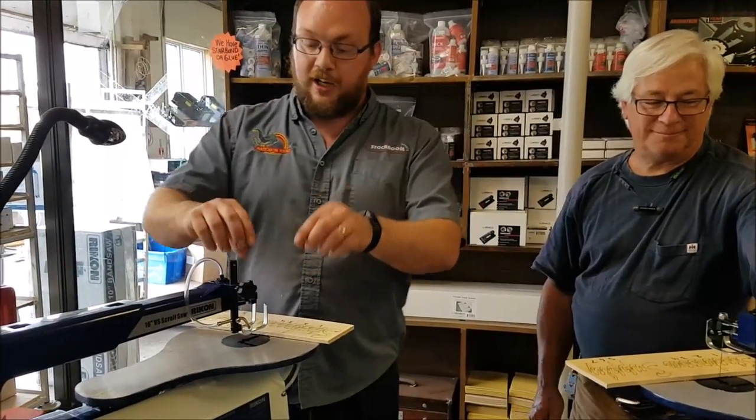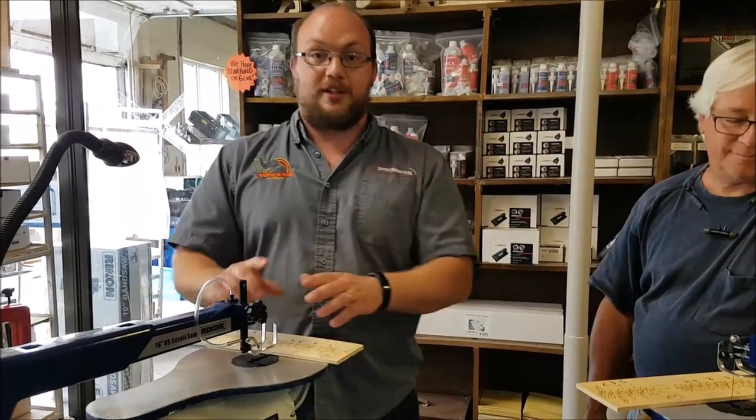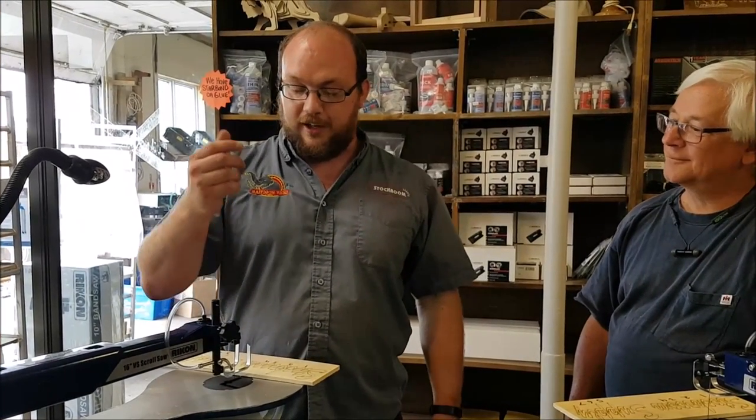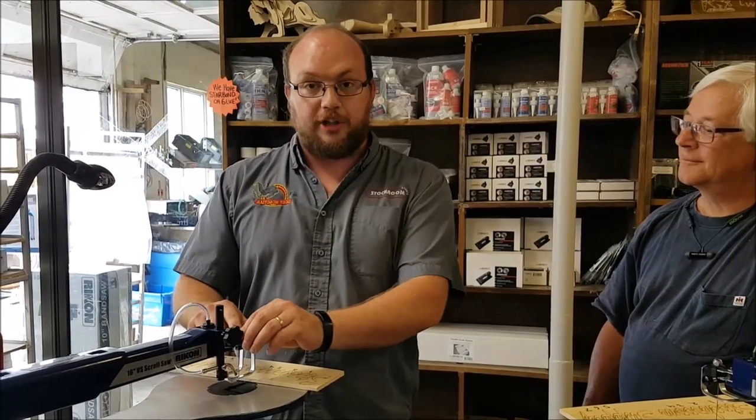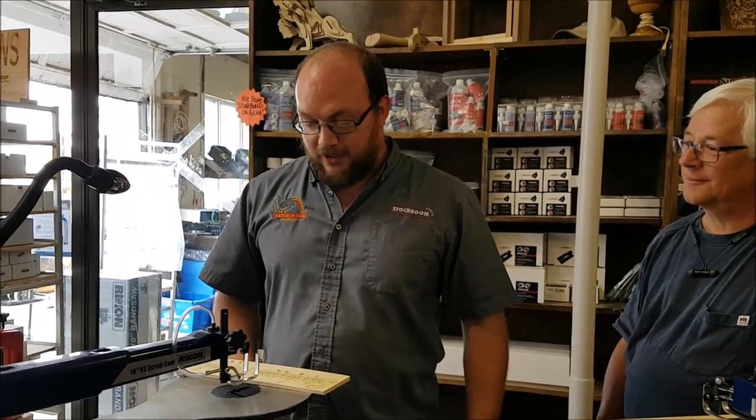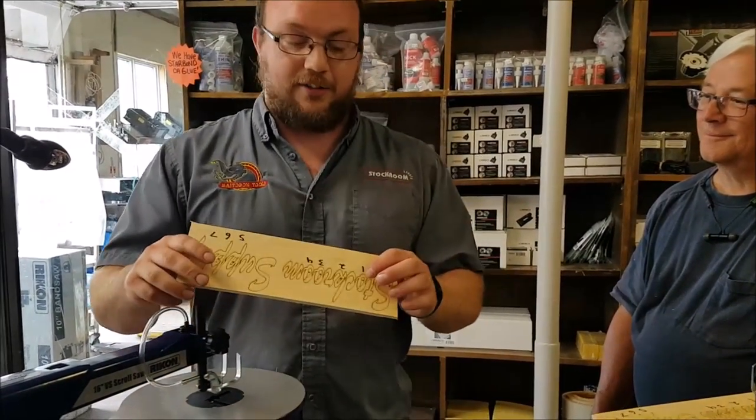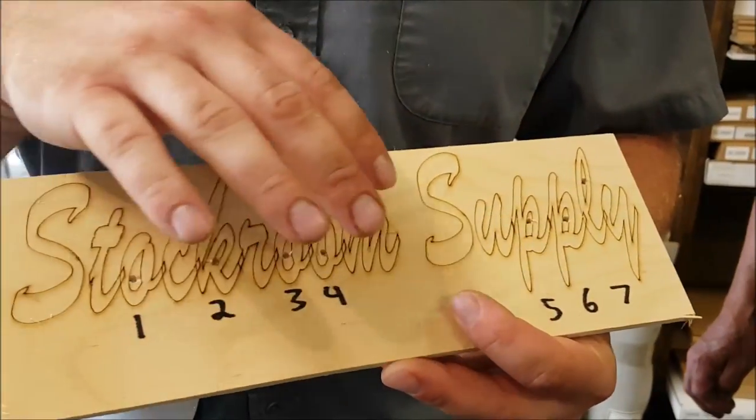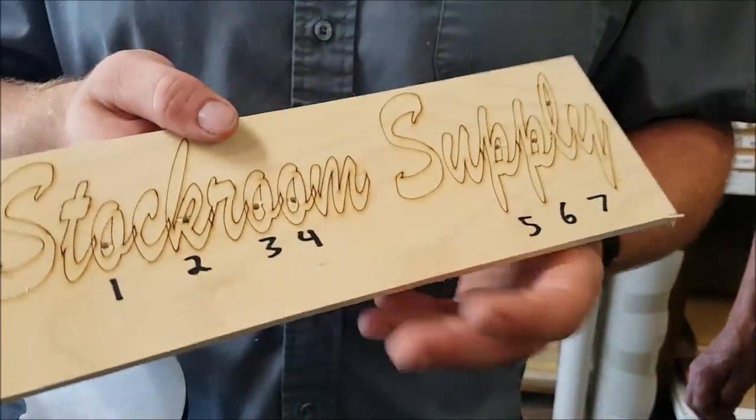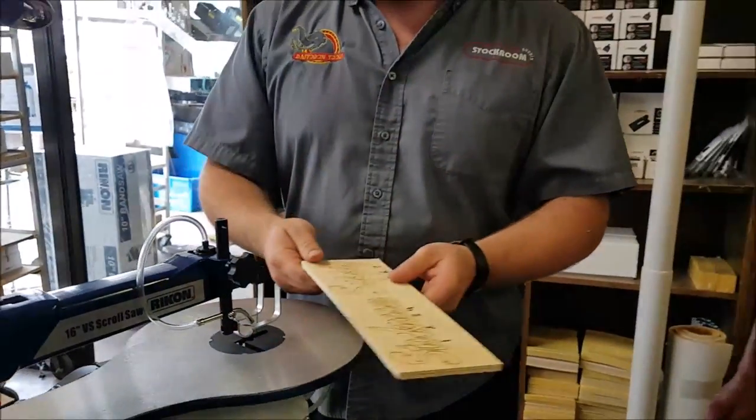So first off, this Rikon scroll saw is a beautiful machine. The blade holding system is super versatile where it'll hold a pinless blade or pinned blades. So it'll do pretty much any blade type. Now, when you have something that's so versatile like that, sometimes certain things, while it'll do everything, it may not do some things very well. And one of those things is interior cuts on the fretwork like this. So we've got seven little cuts here. So we designed this little clip to kind of improve the speed and how easy it is to do that.